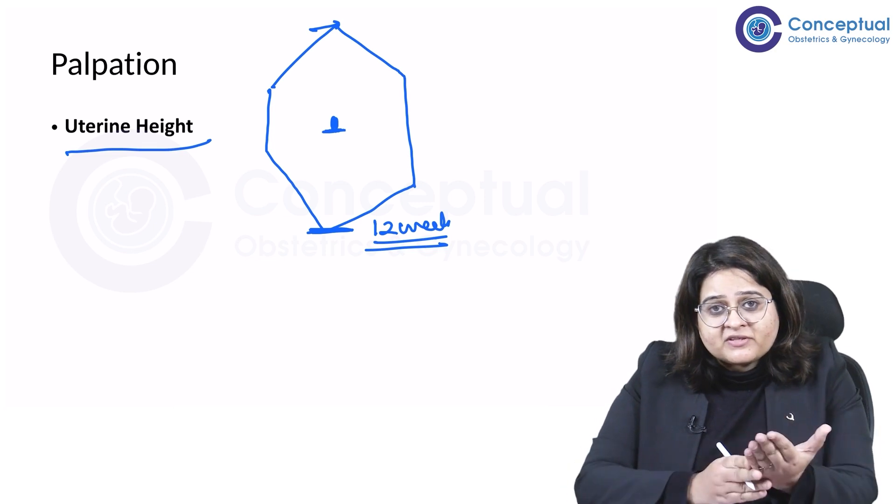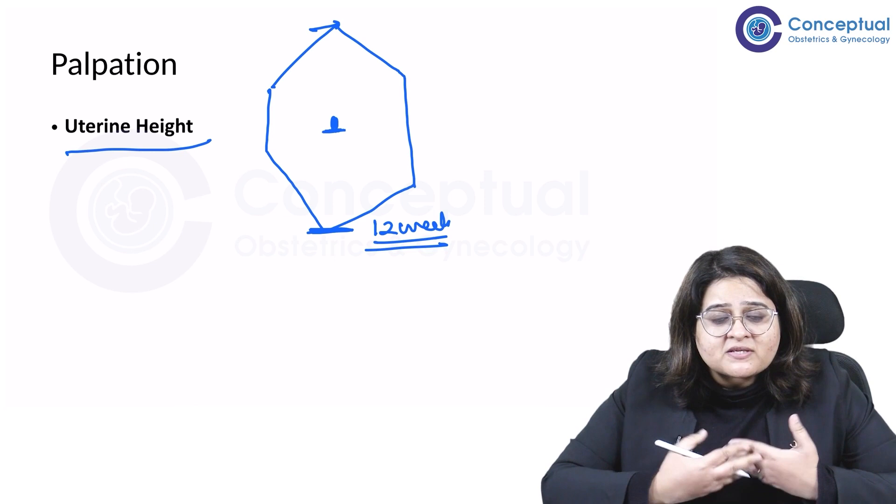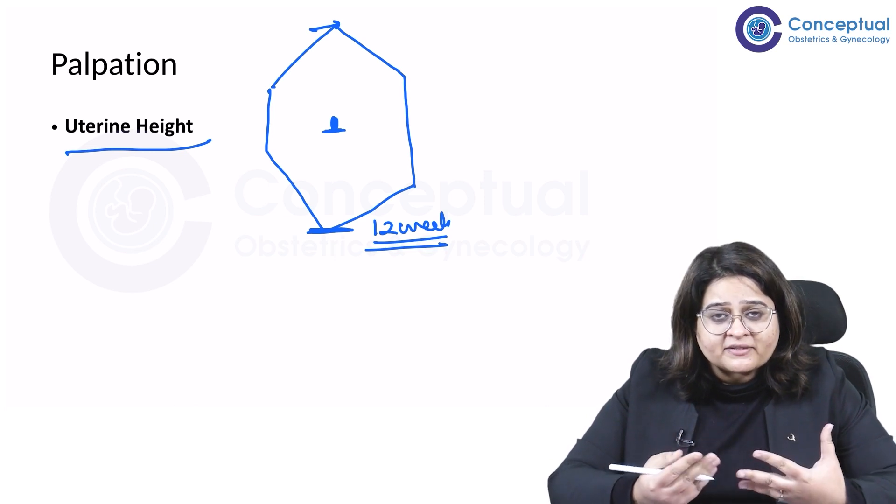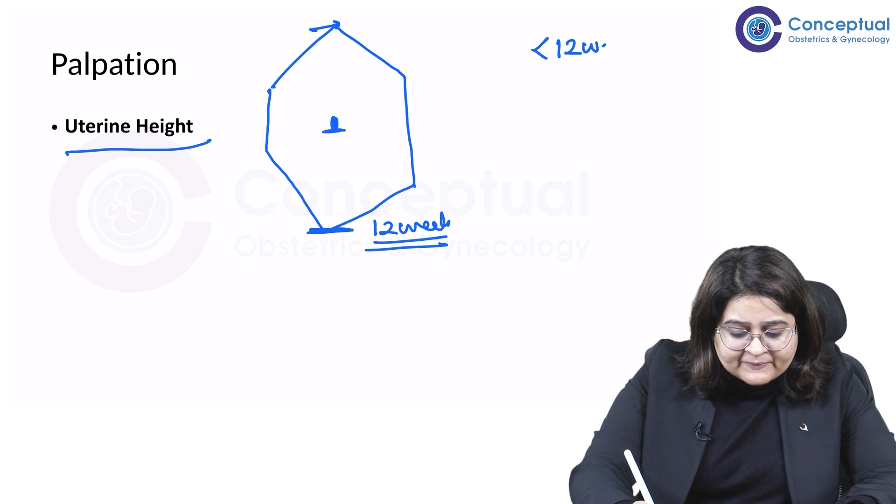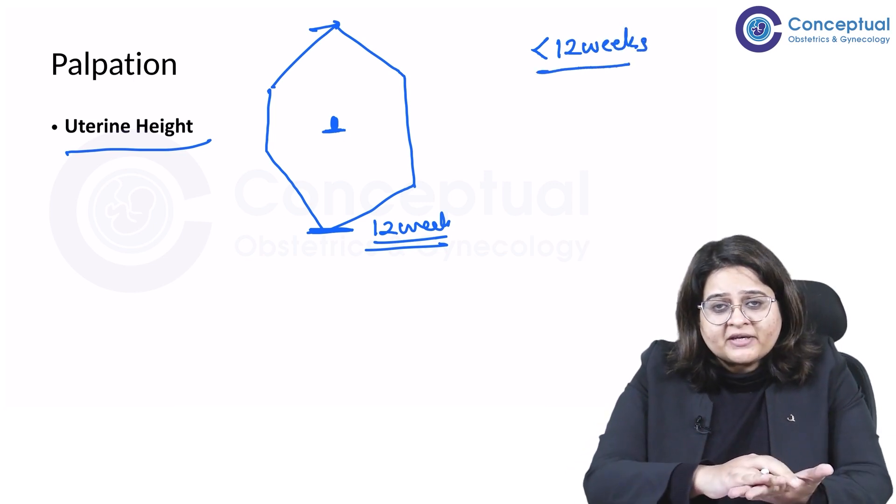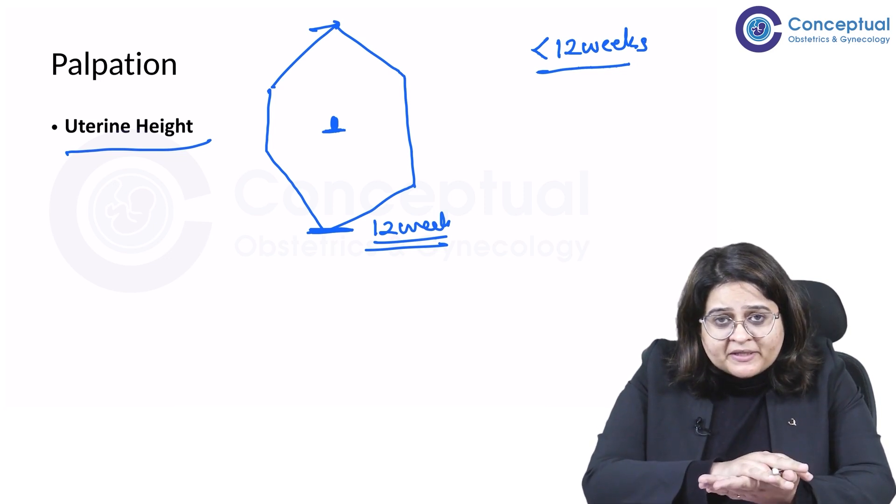The uterus becomes an abdominal organ, that means you can first palpate it just above the pubic symphysis at 12 weeks of pregnancy. That's when you can actually first feel resistance slightly above the pubic symphysis. Before 12 weeks, how are we seeing the uterine height?